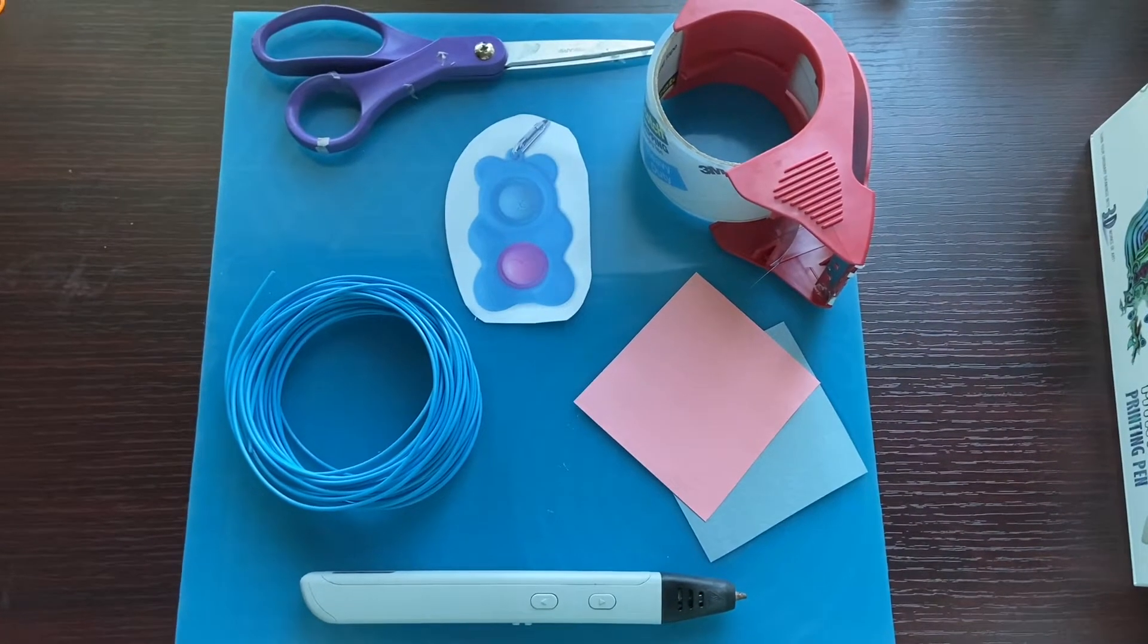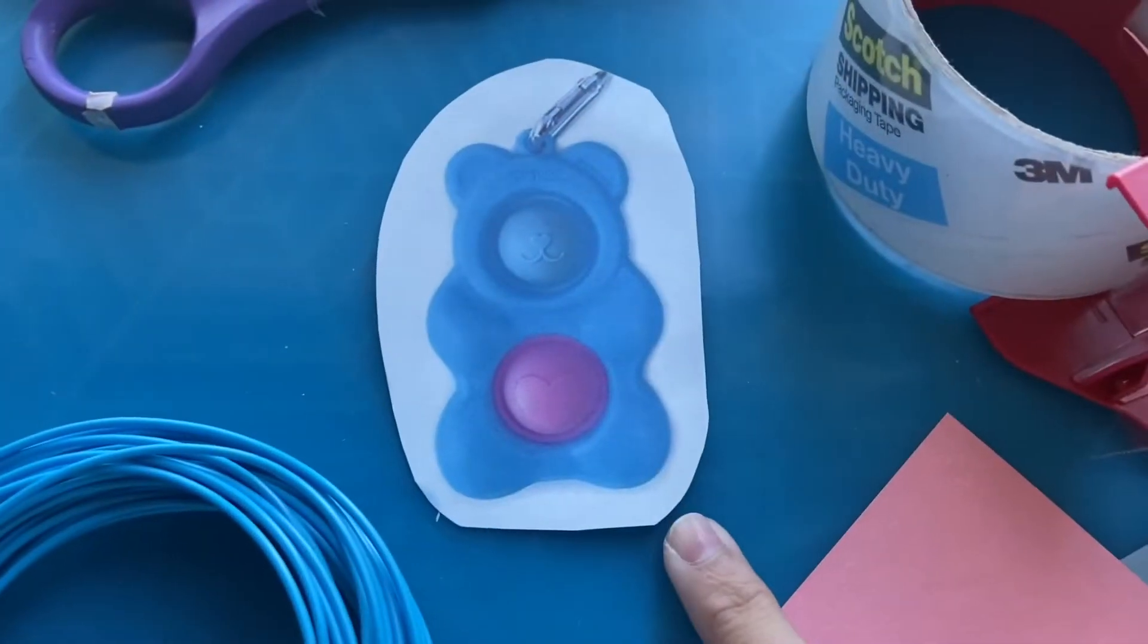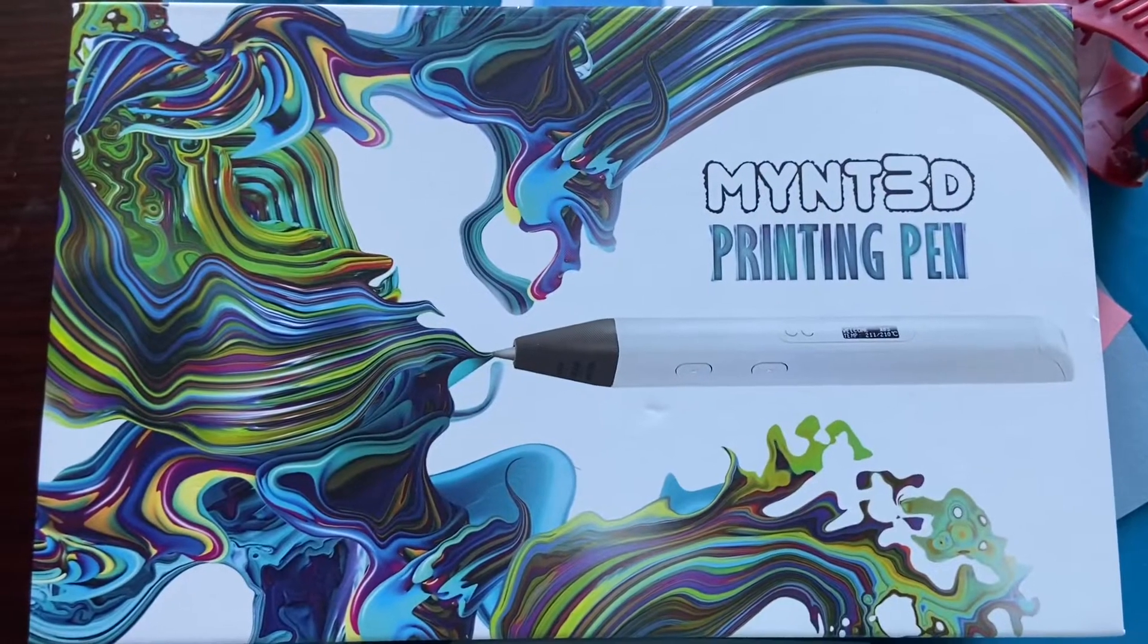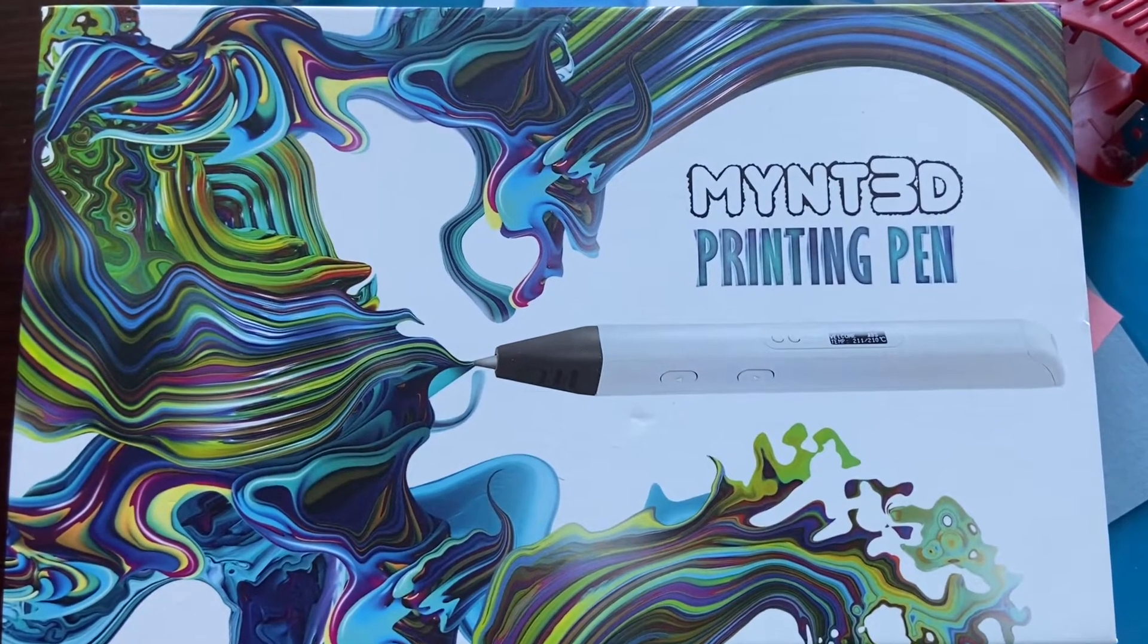These are the supplies you're going to need, and for this you just need to print out a template or you can draw it, whatever you want to do. This is the pop-it I'm going to be making, and for this video I'm going to be using the Mint 3D Pro Printing Pen.